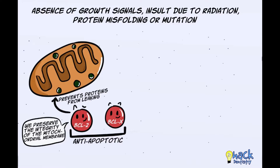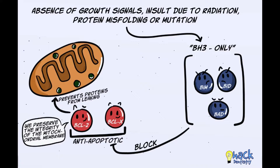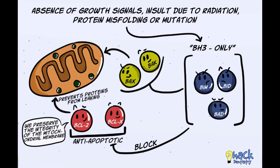However, in the absence of a growth signal or due to insults like radiation or protein misfolding, stress proteins called BH3-only proteins are stimulated. These BH3-only proteins — comprising BIM, BID and BAD — block the function of BCL2 and BCLX. These proteins further activate two pro-apoptotic effectors called BAX and BAK, which create channels in the mitochondrial membrane allowing intramitochondrial proteins like cytochrome C to leak into the cytoplasm.